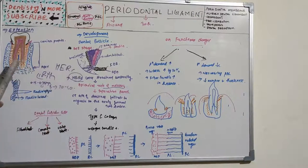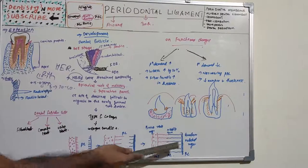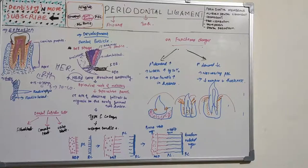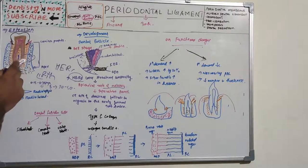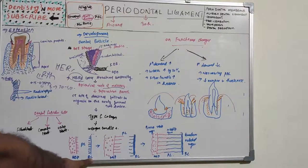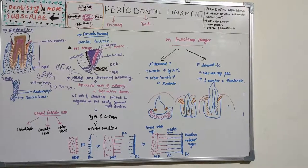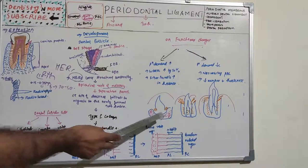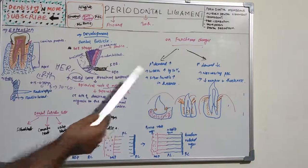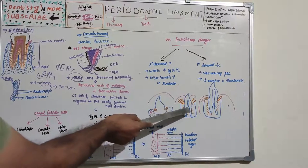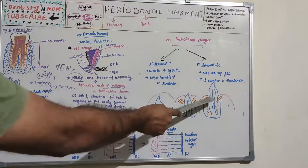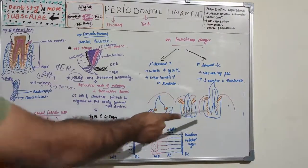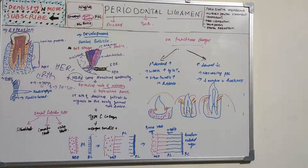The diagram shows the alveolar bone on one side and the root on the other — note the orientation may appear opposite in enlarged pictures. As tooth eruption progresses, periodontal ligament formation increases: initially little ligament is present within the gingiva, then more forms during eruption, and when fully erupted the principal fiber bundles are completely organized around the root.